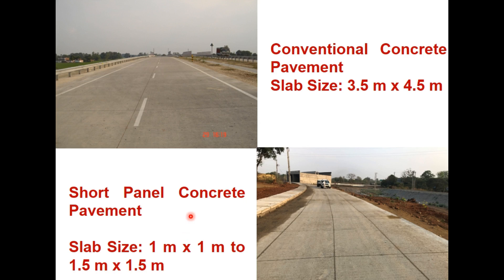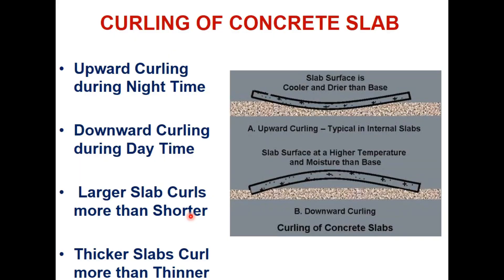Short paneled slabs are generally square in size. To refresh your knowledge, upward curling occurs during nighttime and downward curling occurs during daytime. During upward curling, the slab surface is cooler and drier than the base, whereas in downward curling the slab surface is at a higher temperature and moisture than the base. The larger and thicker the slab, the more it will curl.